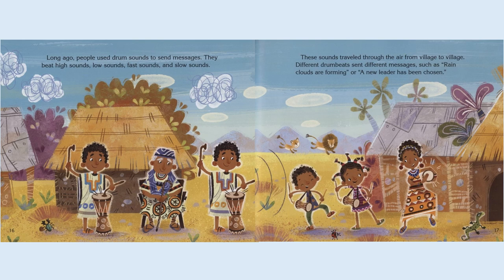Long ago, people used drum sounds to send messages. They beat high sounds, low sounds, fast sounds, and slow sounds. These sounds traveled through the air from village to village. Different drum beats sent different messages, such as rain clouds are forming or a new leader has been chosen.